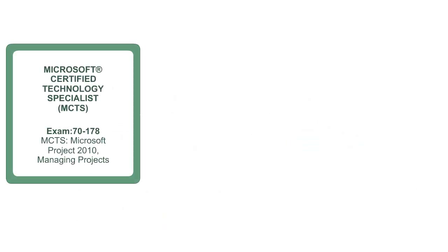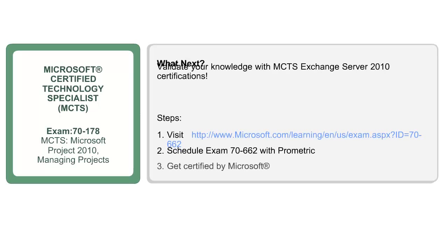Once you have gone through the entire courseware and understood how Microsoft Project works, the next logical step would be to get certified and showcase your expertise. The hyperlink listed on the slide helps you book your certification exam at a nearby Prometric Center. After successfully completing the exam, you can call yourself MCTS Microsoft Project 2010 Managing Projects. MCTS stands for Microsoft Certified Technology Specialist — an associate level certification from Microsoft that validates your credentials based on global standards.